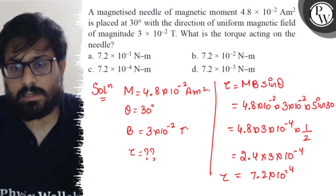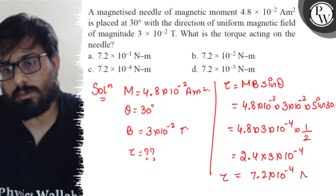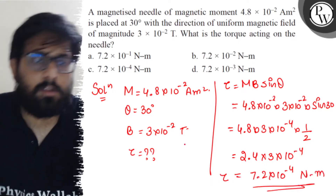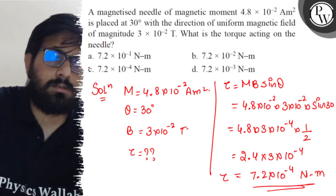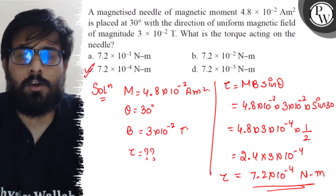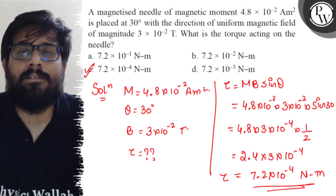Since this is torque, its unit is newton meter, giving τ = 7.2 × 10⁻⁴ N·m, which matches option 3. I hope you got the concept of this question. All the very best!